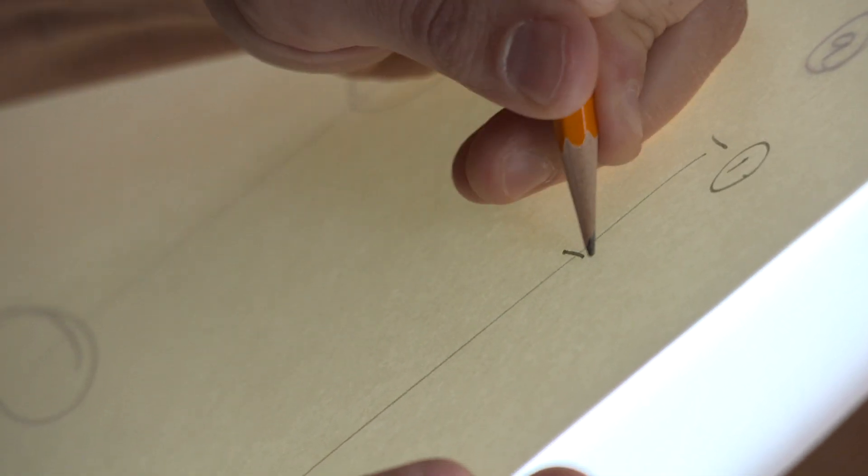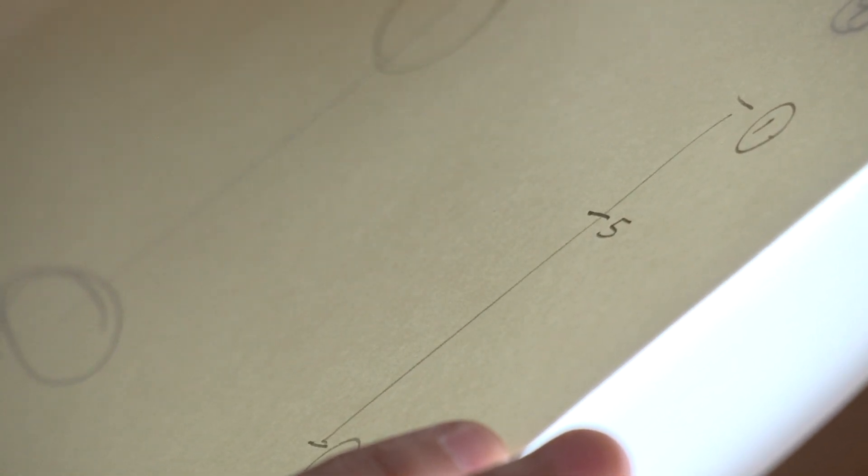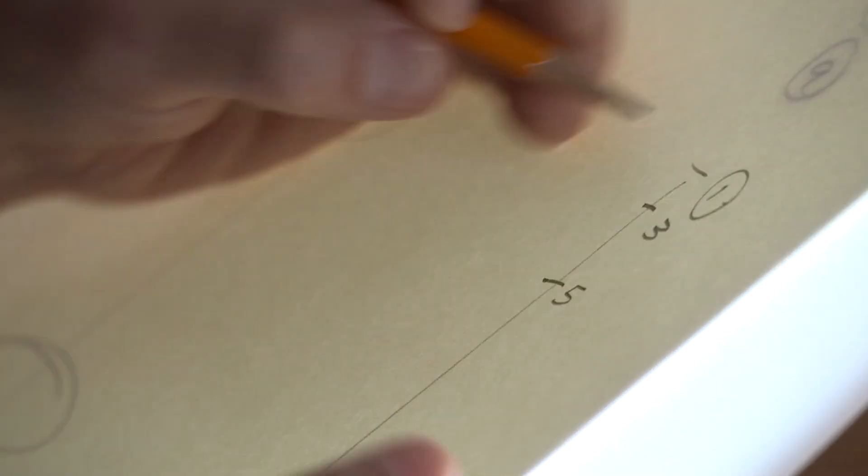So frame five, remember, is a third of the way between one and nine. I'll draw frame three a third of the way between one and five, and so on. These charts help us keep track of the in-between drawings, so we end up with the proper timing.